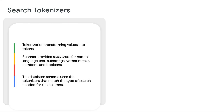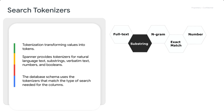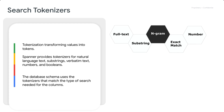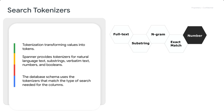Full text search, or FTS for short, works by breaking text into tokens. Queries can then search across those tokens, leveraging a search index. You can tokenize by full text, substring, ngram, exact match, and number.